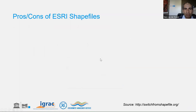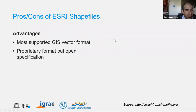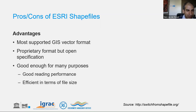Regarding pros and cons of shapefiles: the main advantage is that it is the most supported GIS vector format, though its use is declining as better formats emerge. It was a proprietary format developed by Esri for ArcGIS, but the specification is open so we can easily convert to and from it. It has good reading performance and is efficient in file size, so for many purposes it's just good enough.